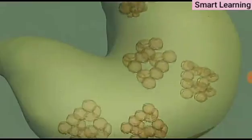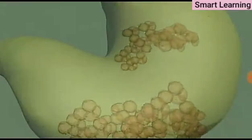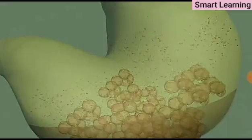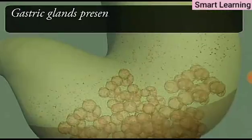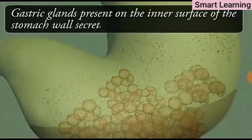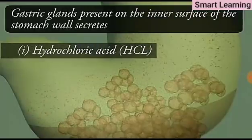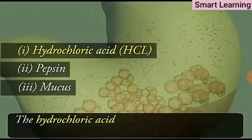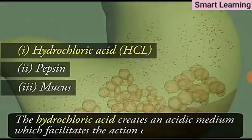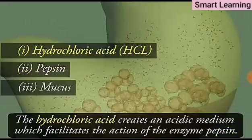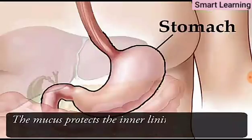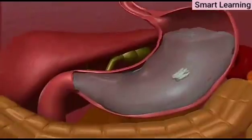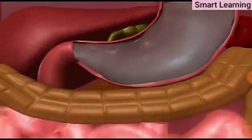Further digestion of food takes place in the stomach. The muscular walls of the stomach help in mixing the food thoroughly with gastric juice. There are three types of gastric glands present on the inner surface of the stomach wall which secrete hydrochloric acid, the protein-digesting enzyme pepsin, and mucus. The hydrochloric acid creates an acidic medium which facilitates the action of the enzyme pepsin.